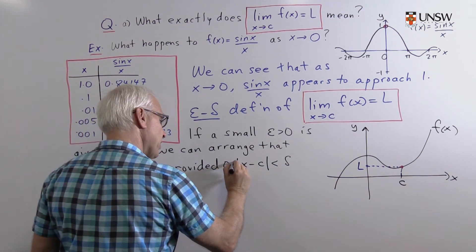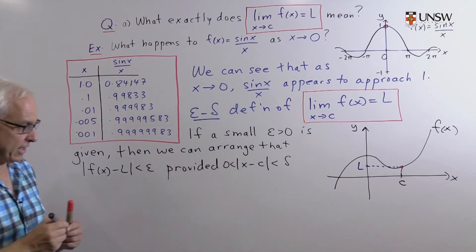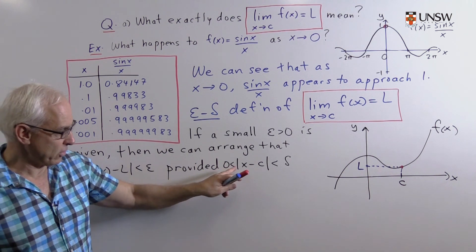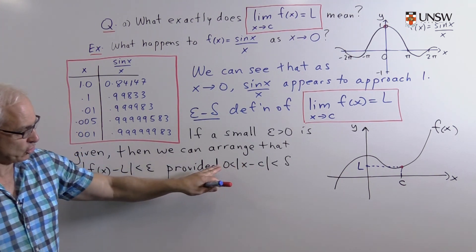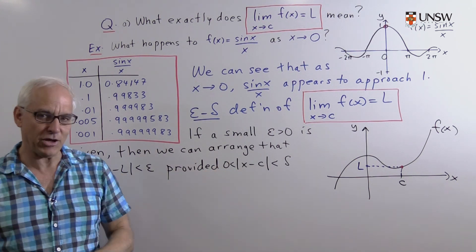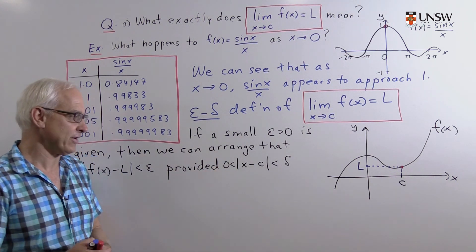Officially we actually put another inequality here: zero is less than the absolute value of x minus c is less than delta, just to clarify that the actual value at x equals c is not required.